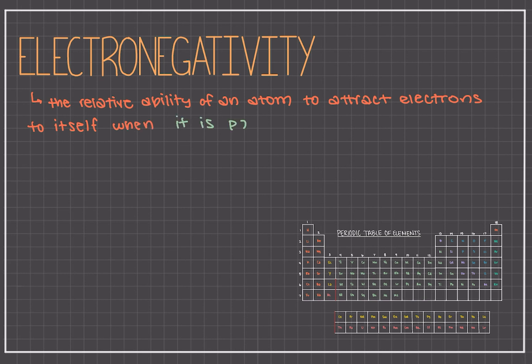In general, electronegativity increases from left to right across a period in the periodic table. Conceptually, this is because as an atom gets closer to a full valence shell, it has a stronger pull for these electrons. Because it's so close, it just needs a few more electrons, so it has a greater desire to obtain those electrons.